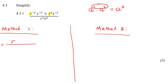So just do minus 2 plus 4, which gives you 2 — put a 2 there. Now moving on to the s's: add those exponents, so minus 5 plus minus 2 gives us minus 7.